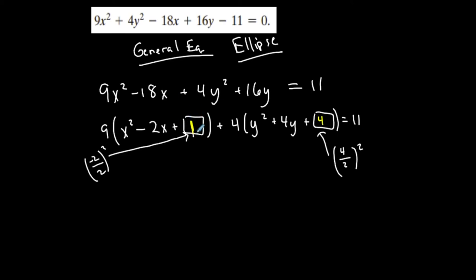What did I really add to the left? I did not add a 1 because the 1 that I placed here is inside parentheses with the 9 in front of it. If I distribute this back through, I really added a 9, so I have to add a 9 to the right hand side.